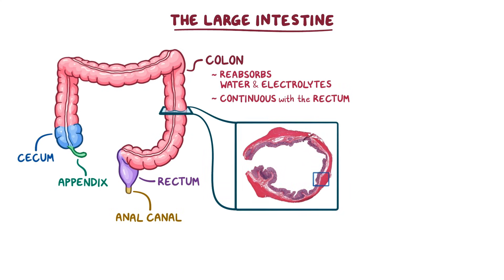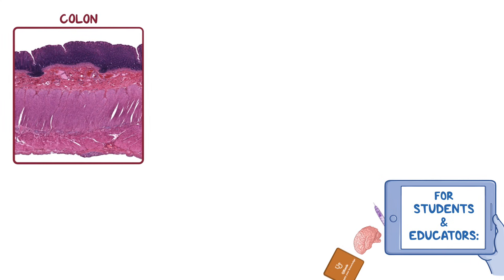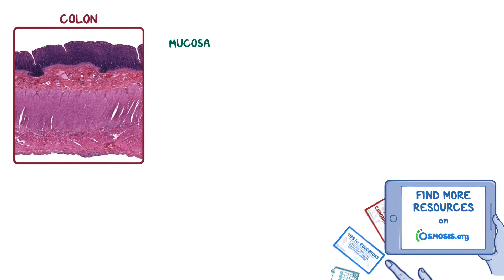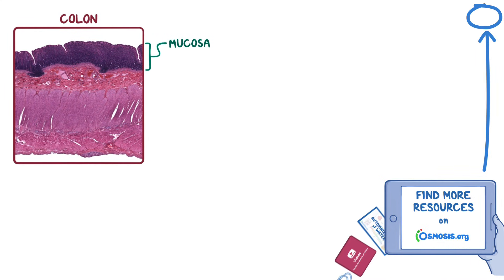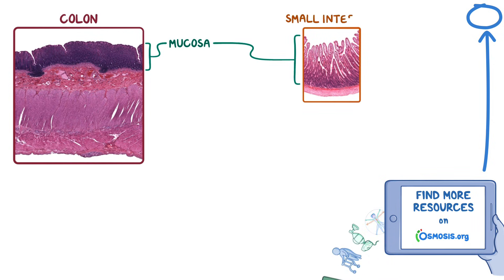Similar to the rest of the large intestine, the colon has four main layers: the mucosa, submucosa, muscularis propria, and a surrounding serosal layer of connective tissue that isn't seen in this image. Even at low magnification, we can see that the colon's mucosa at the top of this image doesn't have the distinct long villi or finger-like projections that would normally be seen in the small intestine.